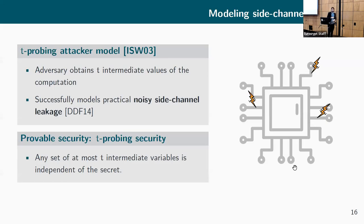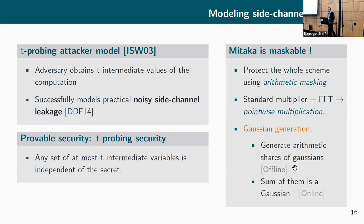All in all, I said that Mitaka was actually maskable, so a quick word on that. Usually the standard attacking model is the t-probing model, in which you basically say that your attacker can probe t values at runtime. The security you want to achieve with regards to this model is t-probing security, and that basically says that if the attacker can take t values, then these t intermediate variables should be independent of the secret. If they are independent of the secret, I can't recover any information on my secret—I'm happy.